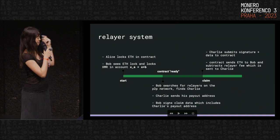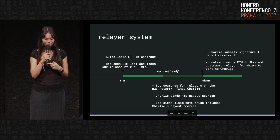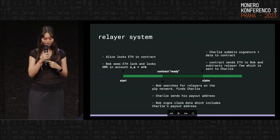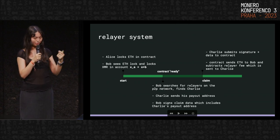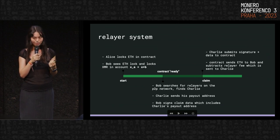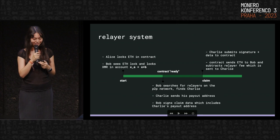This is basically the same as the success path, except in the part where Bob is claiming, he'll search for relayers. Say he finds one named Charlie — Charlie sends his payout address where the relayer fee will be sent, and then Bob signs the claim data which includes this payout address. This is essentially to prevent front running. That was found during testing, but now it's front-run protected.